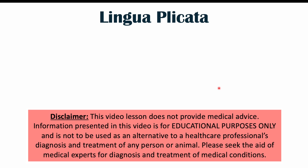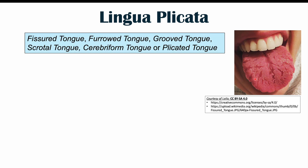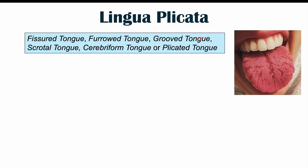Hi everyone. This lesson is on lingua plicata, which is a condition where your tongue looks like this. This condition has many different names, including fissured tongue, furrowed tongue, grooved tongue, scrotal tongue, cerebroformed tongue, or plicated tongue. We're going to talk about some potential causes for this condition, some of the potential complications, and certain things we can do to potentially help resolve or treat it.